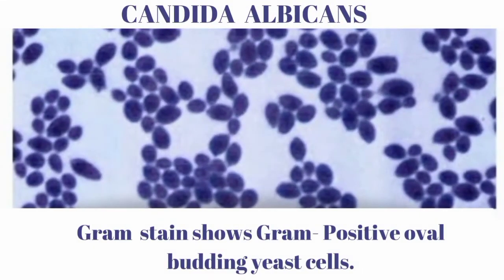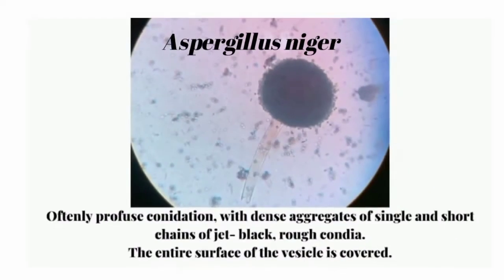Next one is Candida albicans. Gram staining reveals gram-positive oval budding yeast cells. The true hyphae and the pseudo hyphae can be differentiated by the germ tube test.